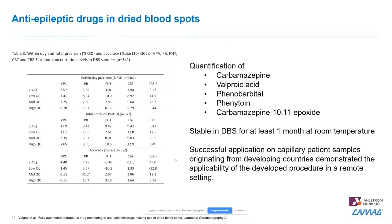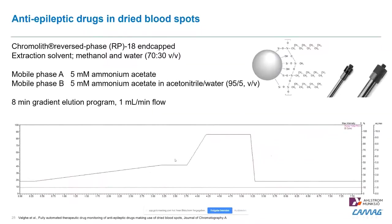The method was transferred into a real-life application. A RoboLit C18 column was used with a very slow gradient at the beginning to get the separation of the anti-epileptic drugs, then a wash cycle to increase the organic content and recover the system for the next sample — eight minutes per sample. The mobile phase was acetonitrile in water with ammonium acetate as a buffer system.